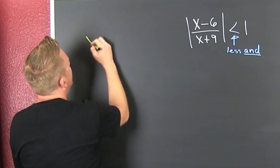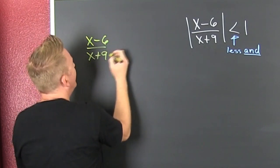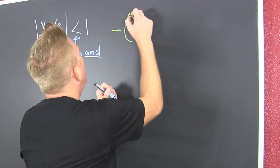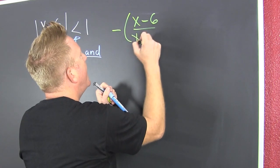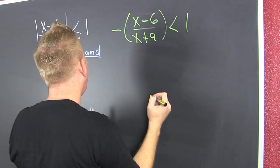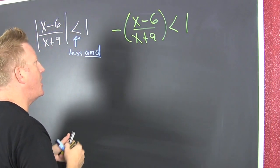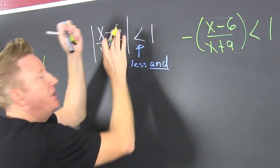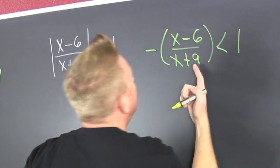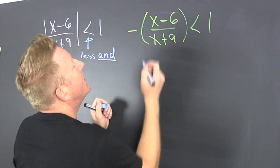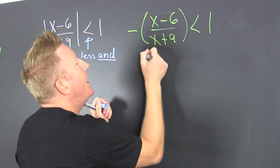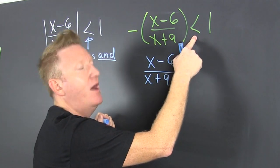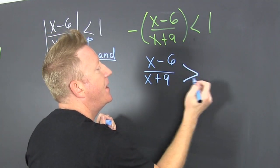Case one: that's (x minus 6) divided by (x plus 9), less than one. And then there's the other case — that's the minus (x minus 6) over (x plus 9) is smaller than one. The stuff inside the absolute value can be positive or negative. If you multiply both sides by negative one, that's (x minus 6) divided by (x plus 9). Whenever you multiply or divide by a negative number, you flip the sign — and don't forget to negate it.